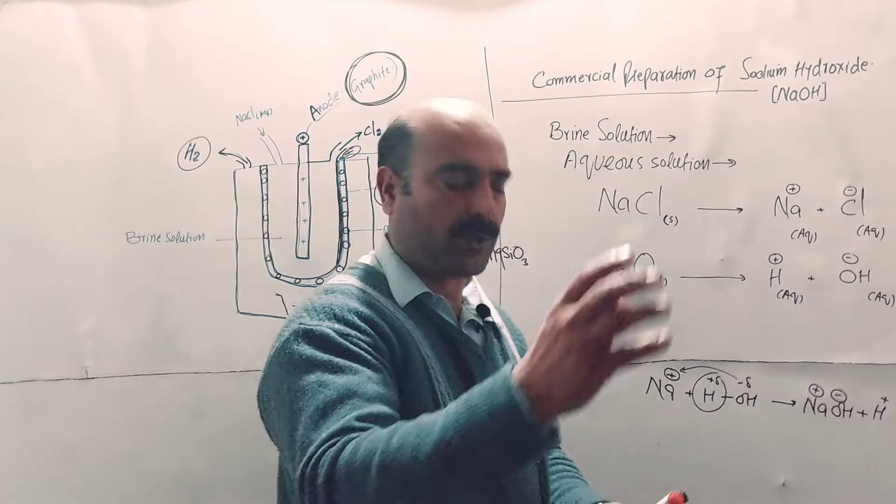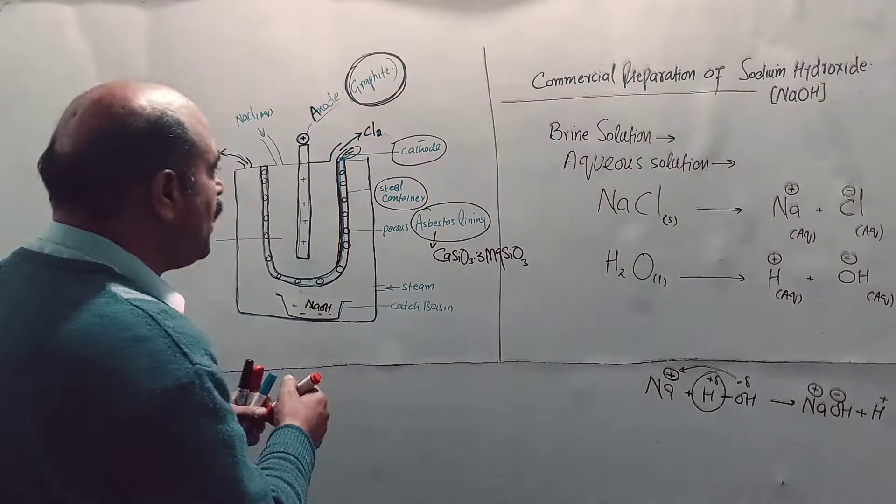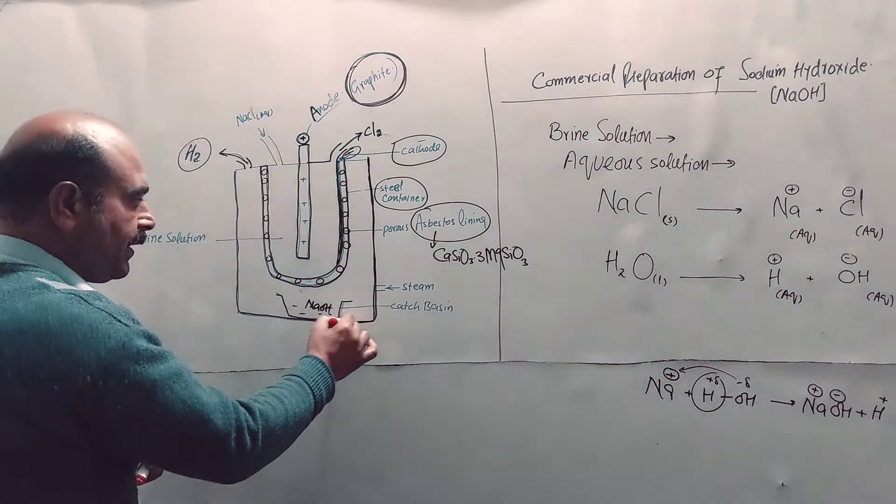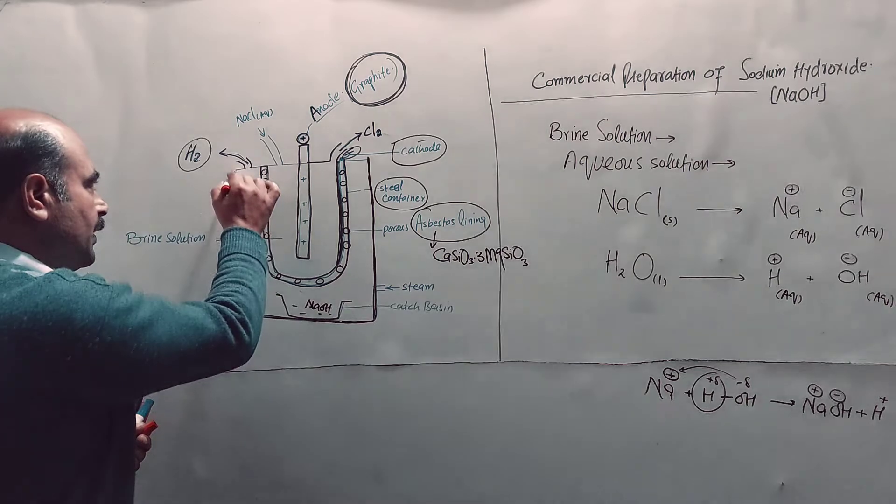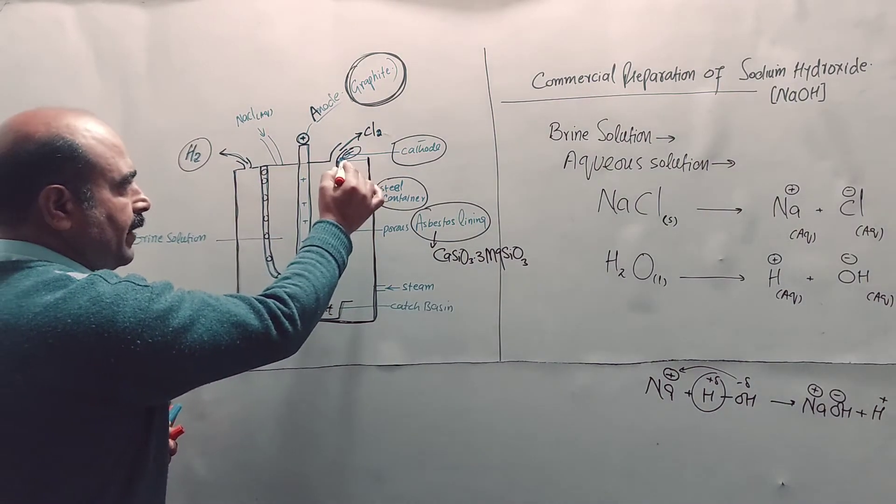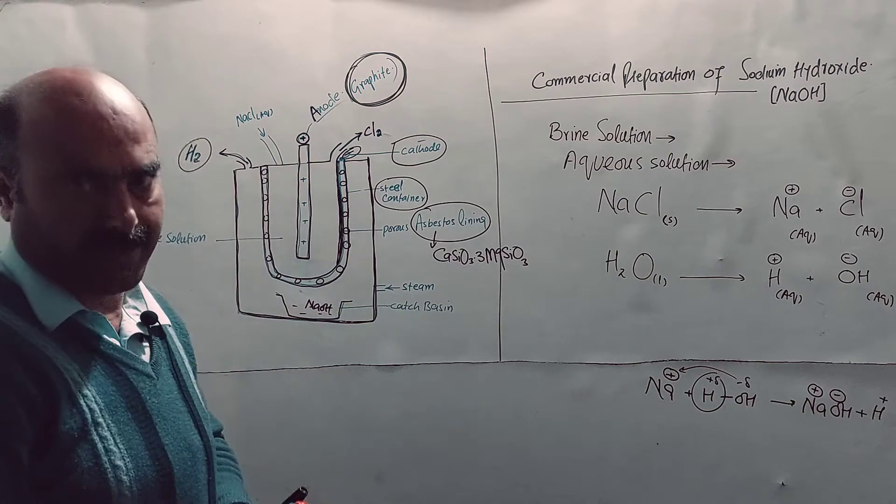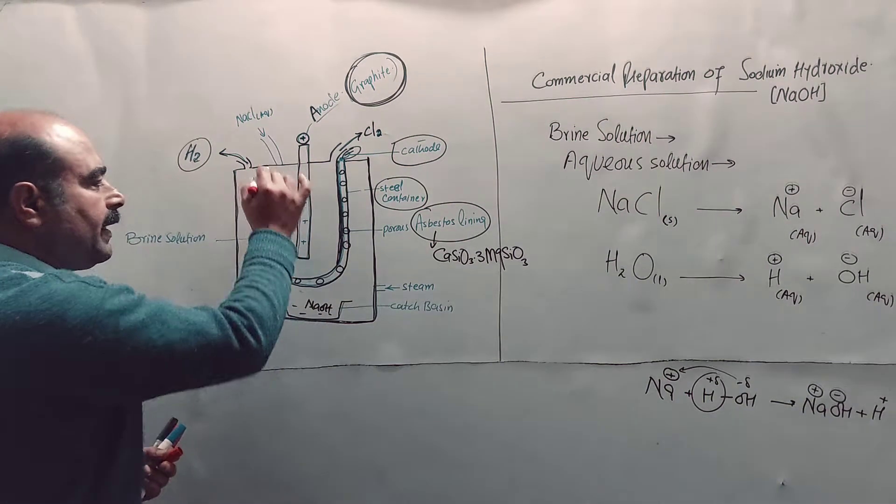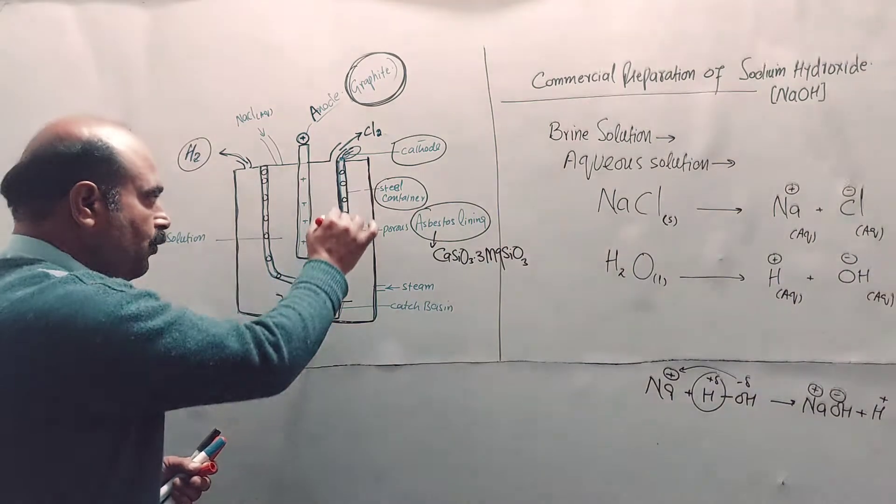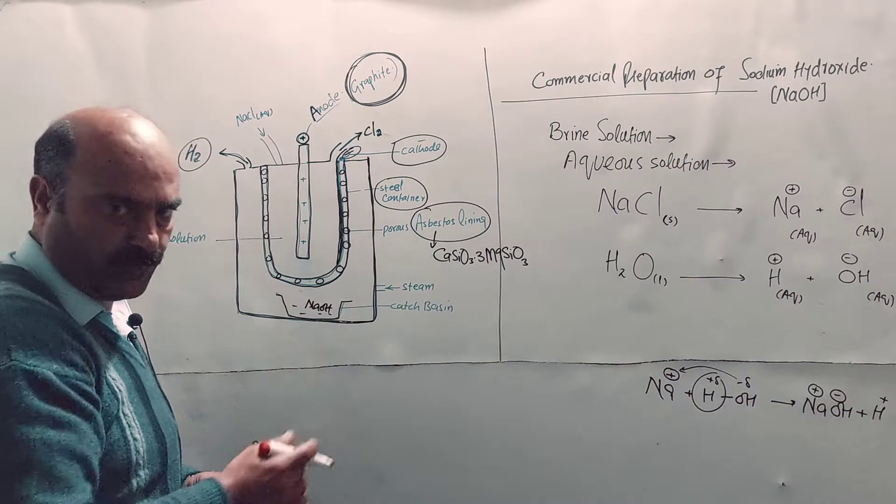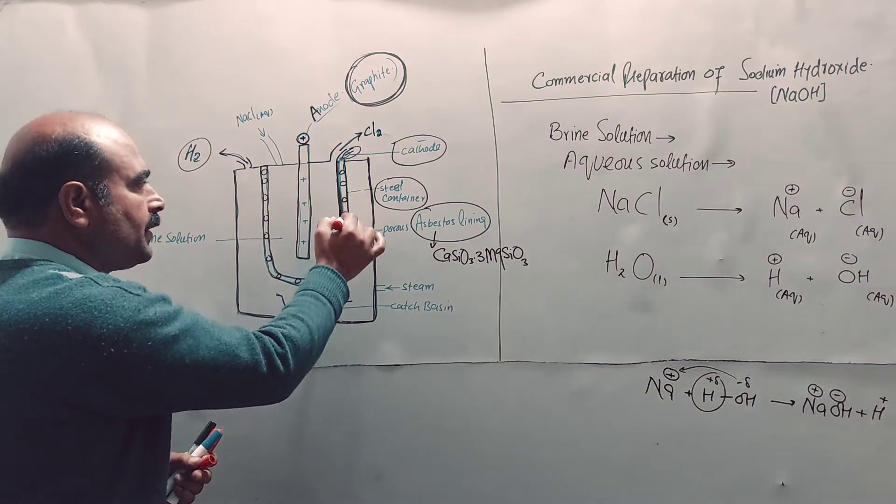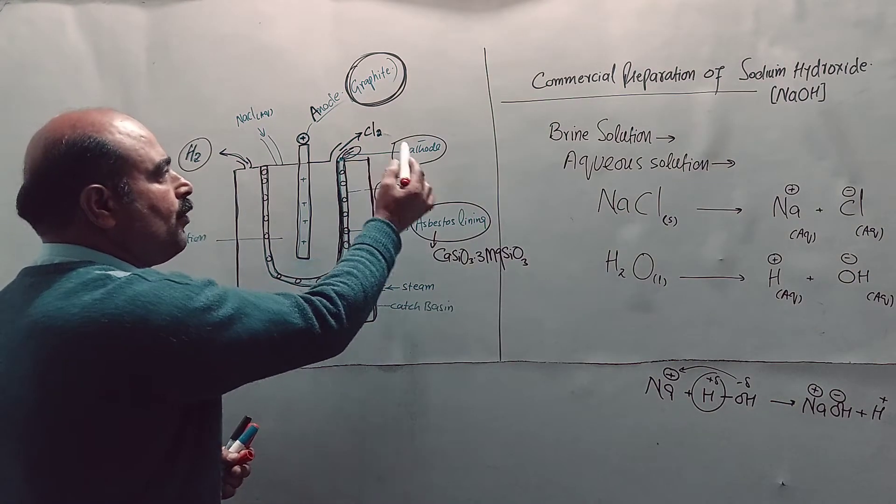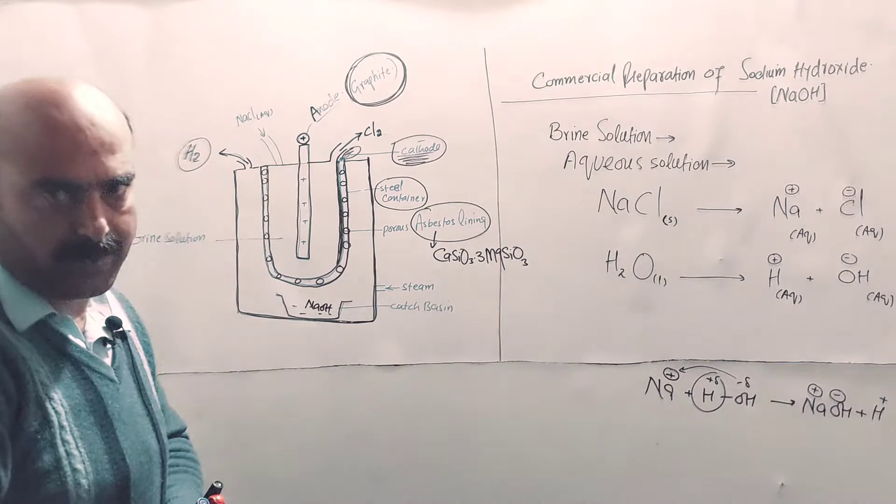Nelson cell construction - the diagram shows the outermost tank is a steel tank, the container. Inside the container is a U-shaped perforated steel cathode. U-shape like the English alphabet U, perforated means having small pores. The cathode is connected to the negative terminal of the battery, so it acts as the cathode carrying negative charge.